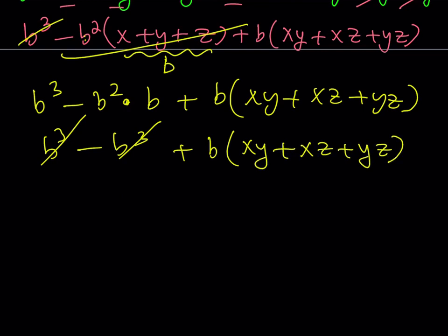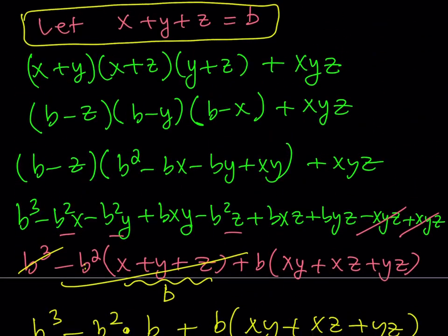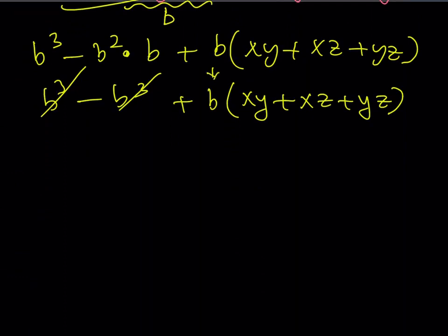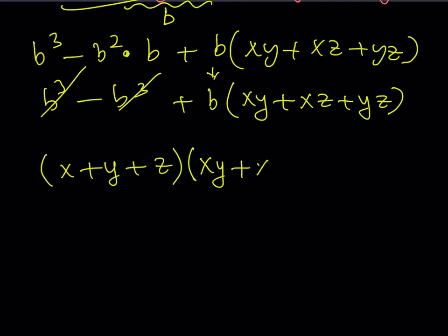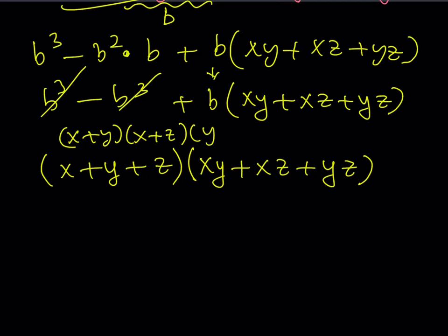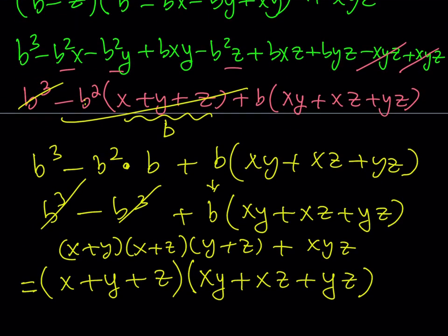But what is b? Well, b = x + y + z. So replacing b gives (x + y + z) multiplied by (xy + xz + yz), which is our original expression in factored form. Remember, our original expression was (x + y)(x + z)(y + z) + xyz — a sum — and it equals this product, which is the factored form.